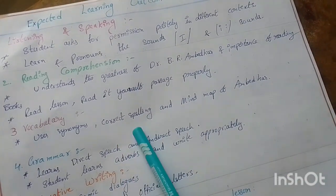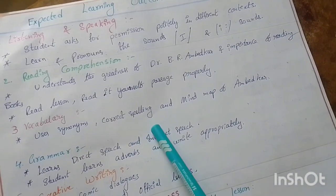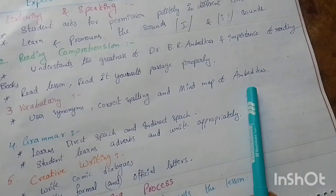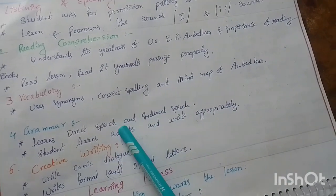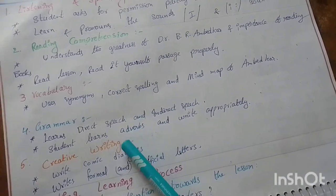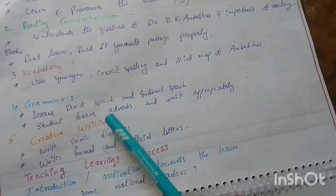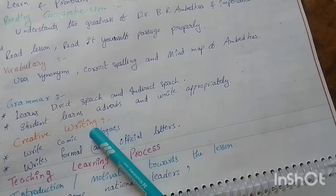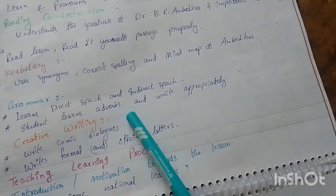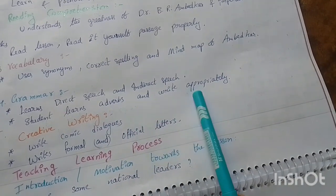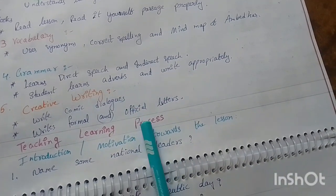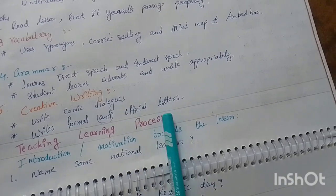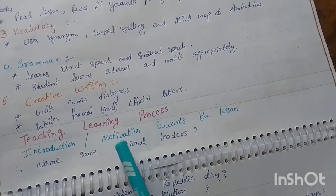Vocabulary: students use synonyms, correct spelling, and mind mapping. Grammar: students learn direct speech and indirect speech; students learn adverbs and write appropriately. Creative writing: write comic dialogues and write formal and official letters.